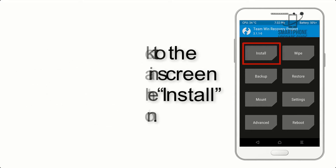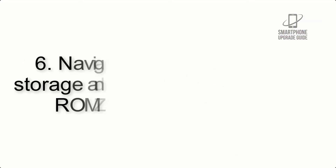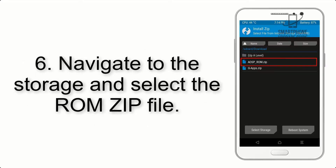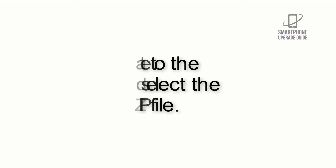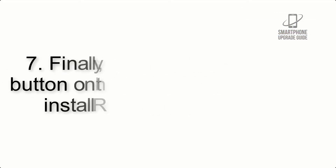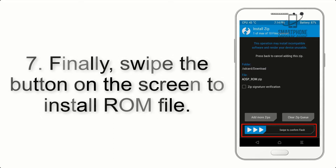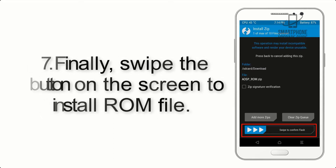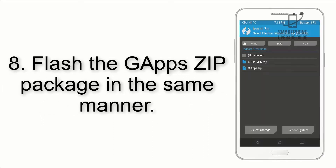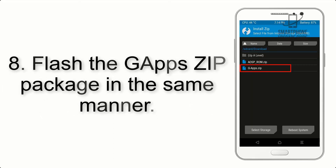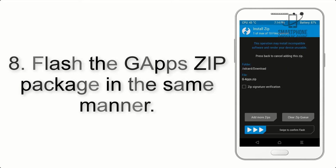Tap on the Install button. Step 6: Navigate to the storage and select the ROM zip file. Step 7: Finally, swipe the button on the screen to install the ROM.